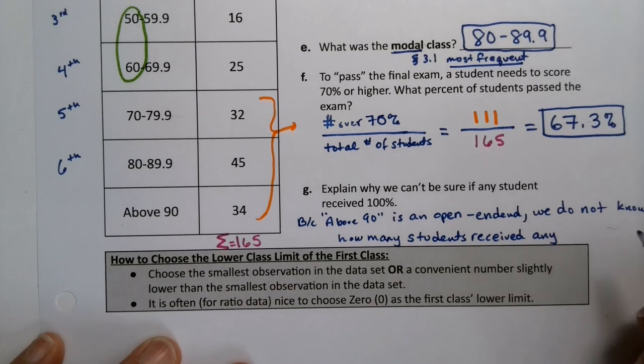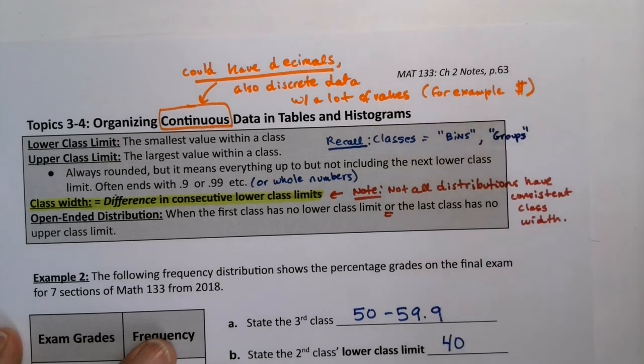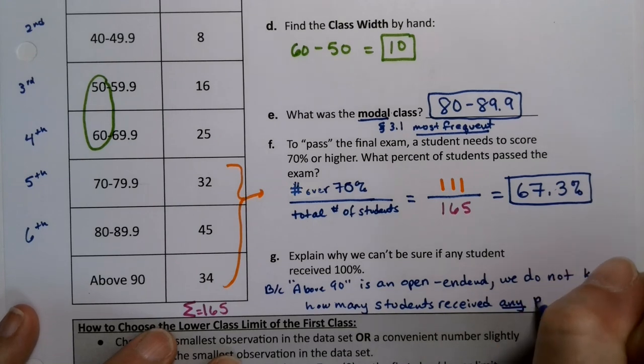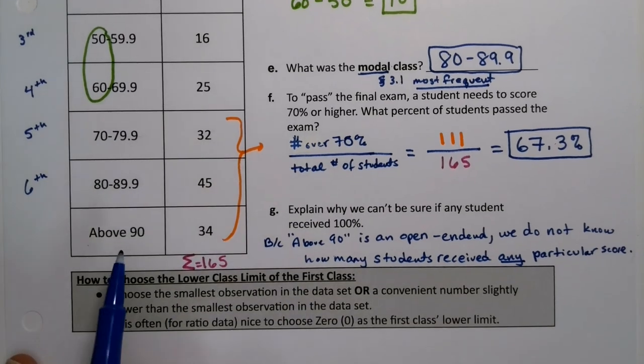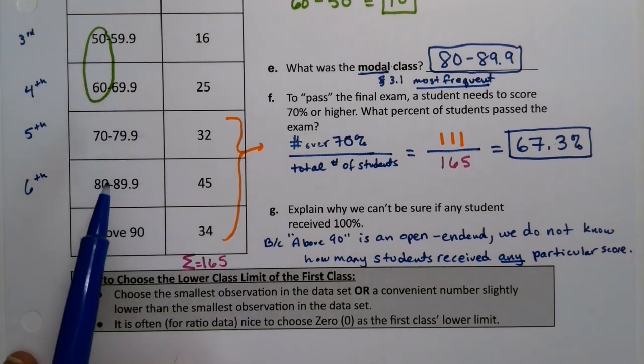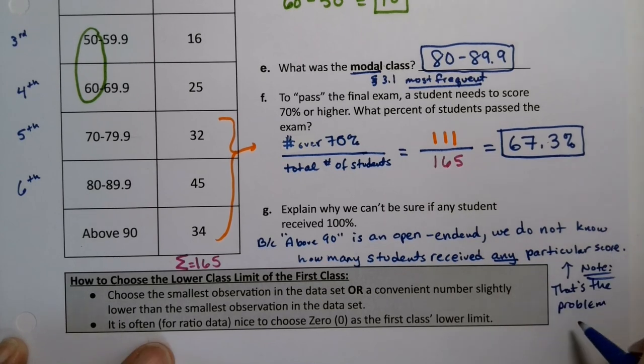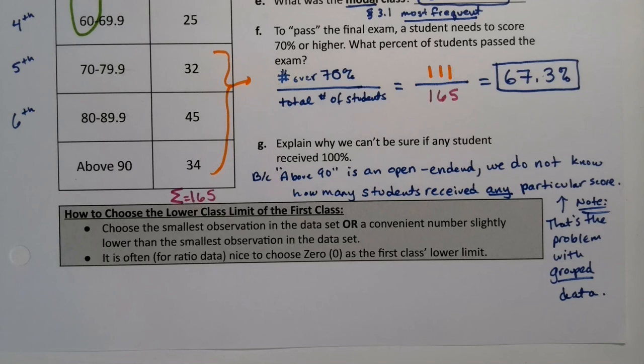That's the problem with binning. When you put things into bins and groups like this, classes or groups, you're grouping. When you put things into groups like this, you lose the ability to know what any of the particular scores were. We don't know what any students received on any particular score. We just know in general what groups they're in, including 100. 100 is especially bad because this is open-ended, but honestly, any of these classes makes no difference. These 32 students, were they all at 70? Were they all at 75? We don't know. We have no way of knowing. That's the problem with grouping. When you group data like this, you lose the ability to know what any particular score or value was, which is a problem sometimes.